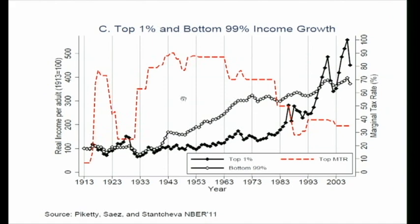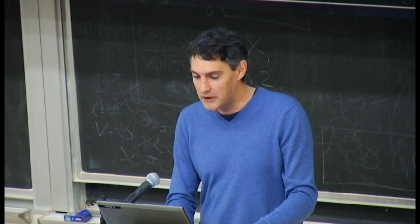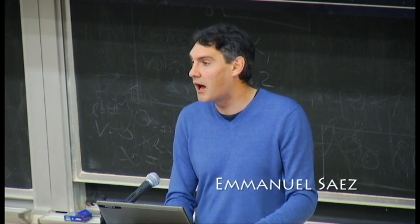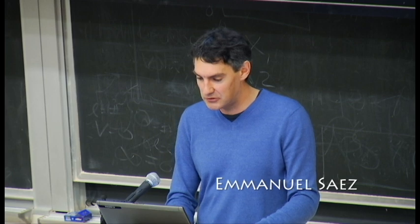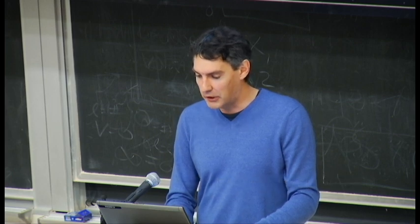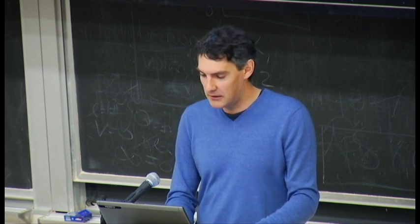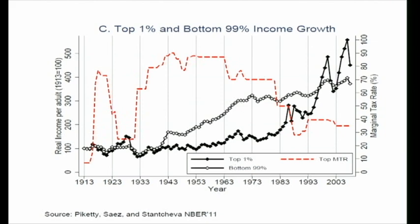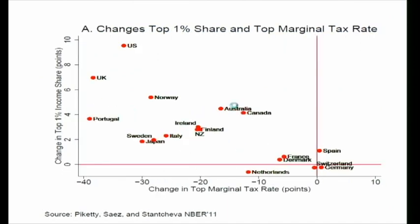Another important fact visible in that graph is that there have been periods in the United States where you had extremely high top tax rates — in excess of 70% — and yet there was good economic growth for the vast majority. That was a period where the U.S. economy was growing and that growth was definitely benefiting the bottom 99%.